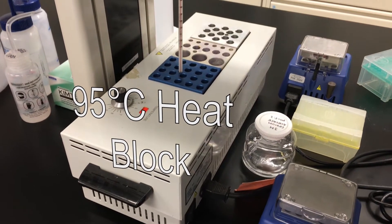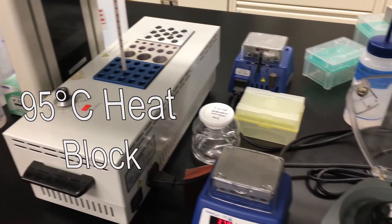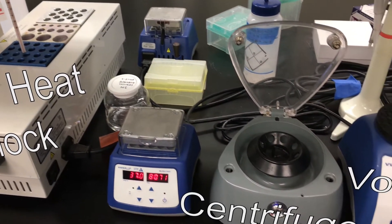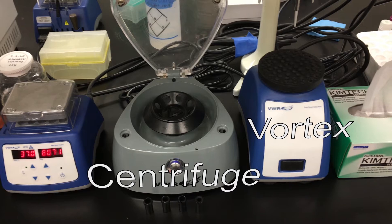The benchtop equipment we will use includes a heat block set to 95 degrees Celsius, a benchtop centrifuge, and a vortexer.